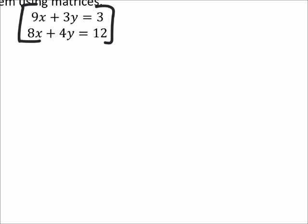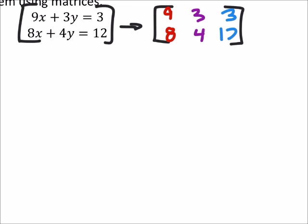So I'm just going to rewrite this as an augmented matrix with the coefficients of x in the first column, the coefficients of y in the second column, and the answers can go in the third column. So I've got this first row, this is row 1, and I've got my second row, row 2.